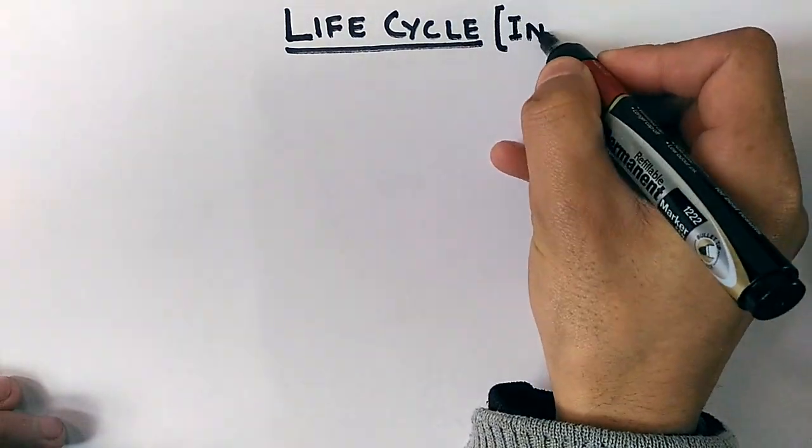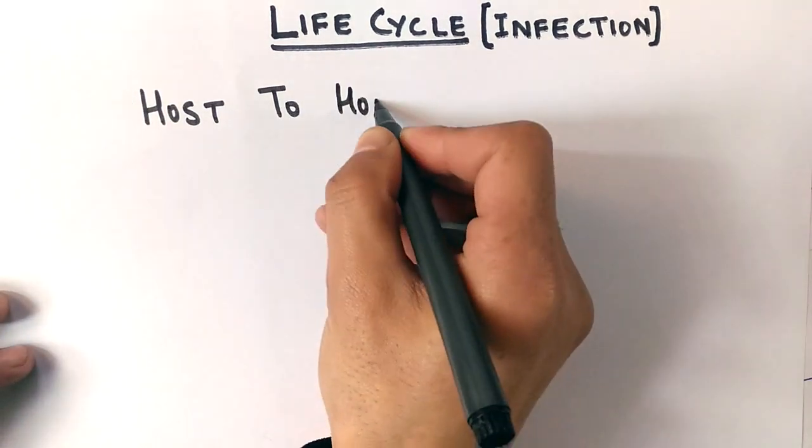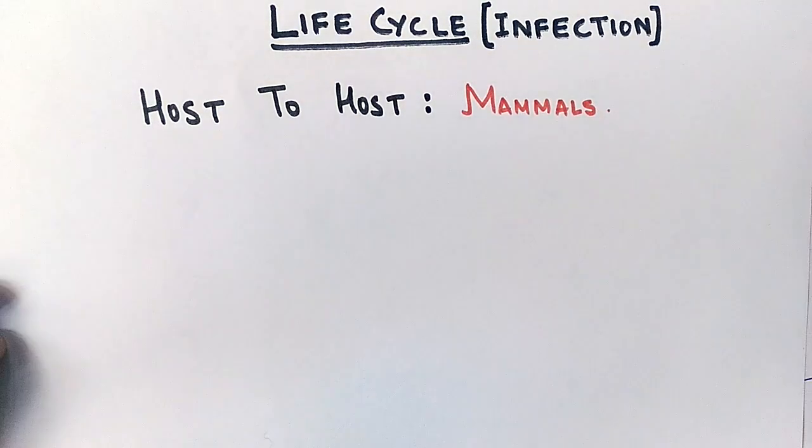First, let's discuss the key points in its life cycle. The first point we see here is from host to host. Being a zoonotic virus, it gets transmitted from one animal to another through biting, and it's mostly in mammals.